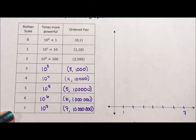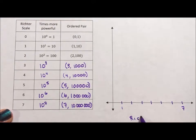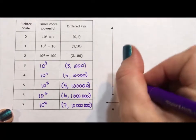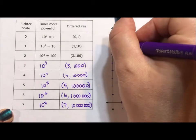And this is going to be the Richter scale down here, because it's always good to label your graph. And then 1, 2, 3, 4, 5, 6, 7.